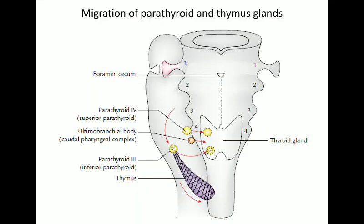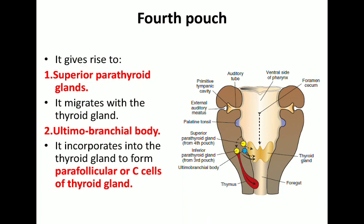The parafollicular cells, or C cells of the thyroid gland, produce calcitonin. The fourth pouch forms the superior parathyroid gland (parathyroid 4), which migrates with the thyroid gland and reaches near the upper pole of the posterior part of the thyroid. The ventral wing forms the ultimobranchial body, which ultimately becomes the parafollicular C cells incorporated into the thyroid gland. In the diagram, the blue ventral wing forms the ultimobranchial body, while the dorsal wing forms the superior parathyroid.